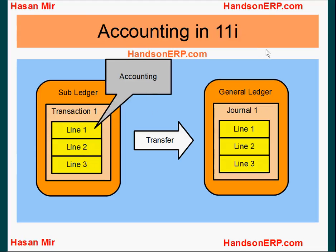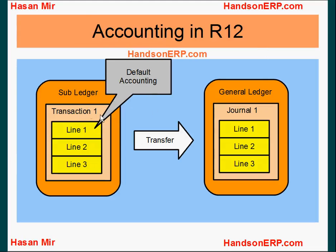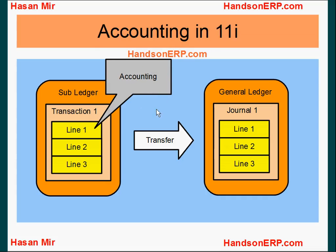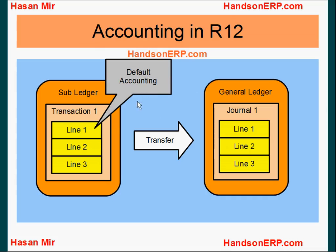But in Release 12, this has changed. The transaction and its distribution that you're seeing in your subledger — like payables, receivables, purchasing, asset management and so on — is not representing your accounting. This is your default accounting. So in Release 11i you would call the transaction and its distribution as accounting; in Release 12, you call it default accounting. Why default accounting? Because it will be intercepted along the way.